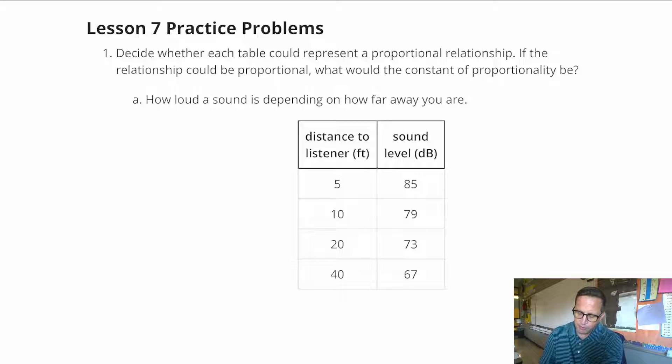But all we have to do, if we want to figure this out, all we have to do is just take our Y and divide it by the X. If we do 85 and divide by 5, that equals 17.